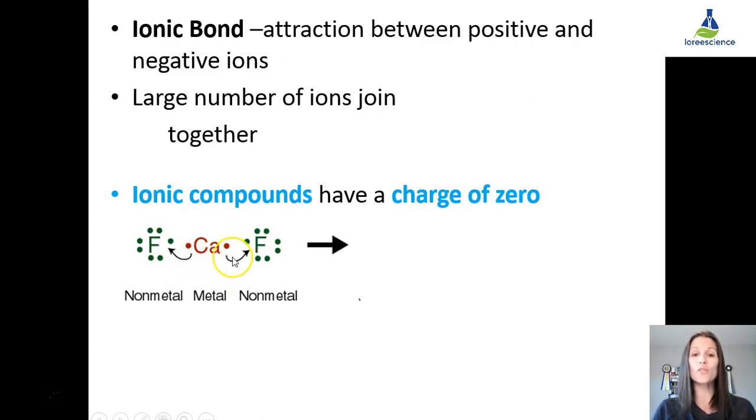In order to make sure that we have a net charge of zero, sometimes you need multiple cations or anions to balance out the charges. In this case, fluorine, by gaining electron, we have a negative one charge, each one a negative one, and calcium would have a positive two, so our formula would be CaF2.